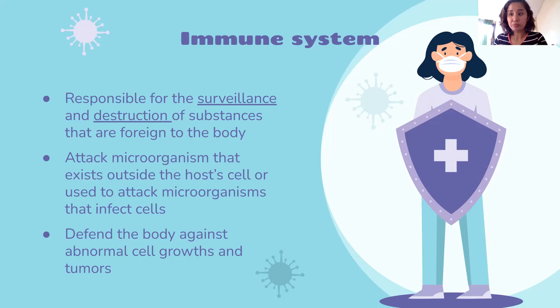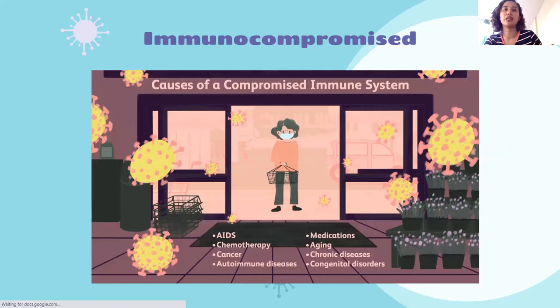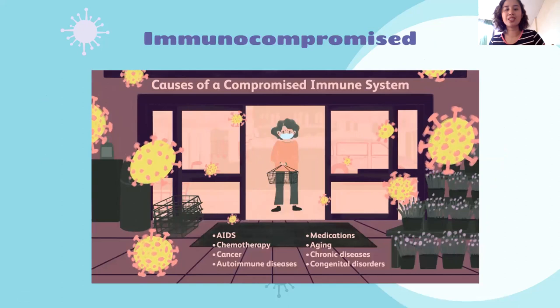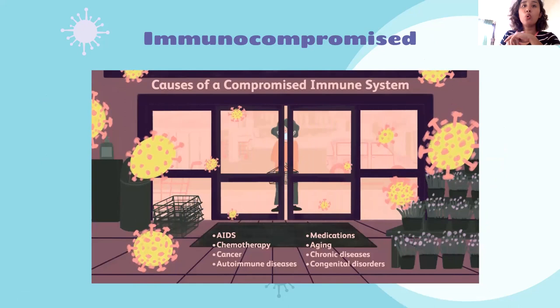The body monitors cells and attacks them when abnormal. But why is there still cancer? At some point, the immune system has limits. If the abnormal growth is easy to kill, they could kill it. However, due to environmental stresses, genetics, and so on, there are cancers. Hopefully everyone has a strong immune system.